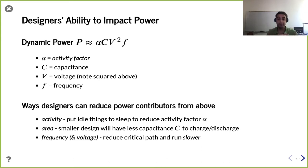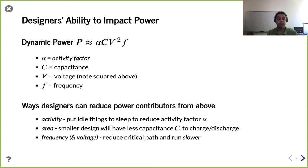Ways to reduce area include reusing components, finding components you don't need, or more efficiently computing things. At the logic level, obvious optimizations — like removing an AND gate with a constant-one input — are often found by CAD tools automatically. But equivalently, as a human designer you may find opportunities to multiplex, i.e., reuse something across multiple places. Smaller area means less capacitance to charge and discharge.